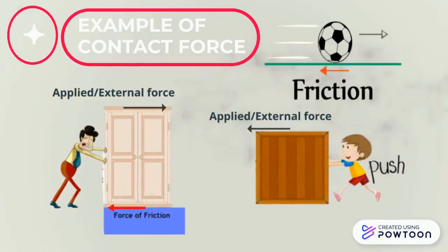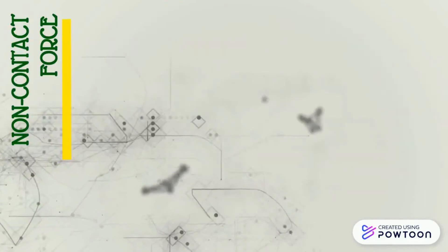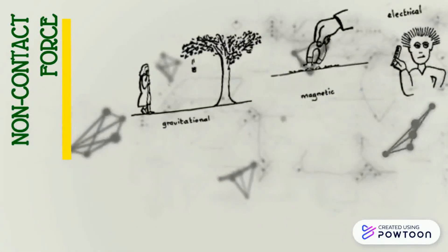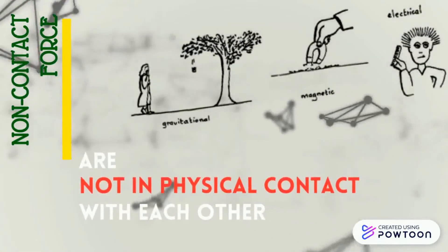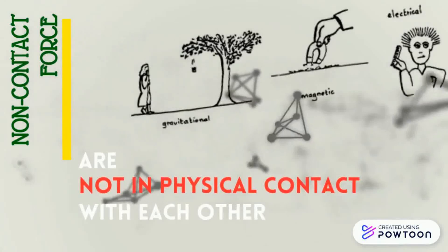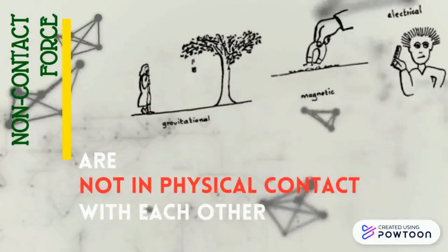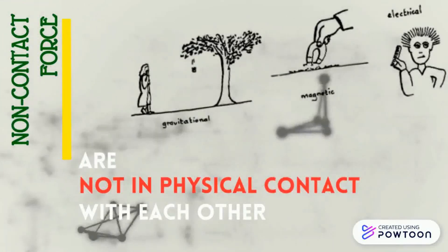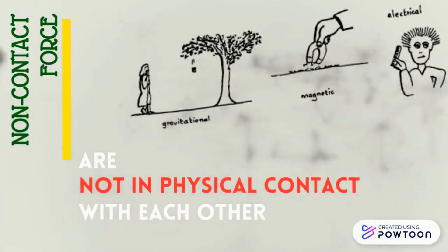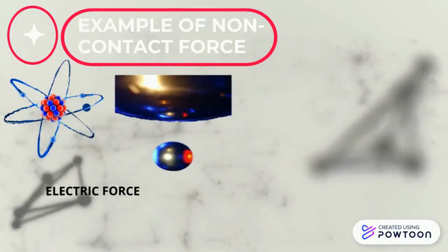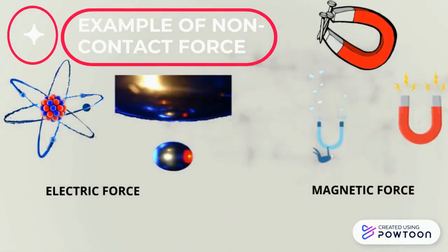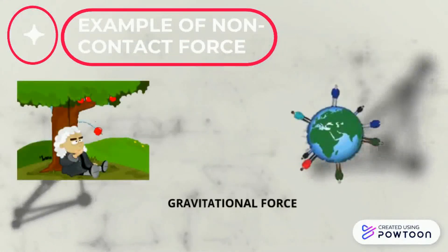These specific forces will be discussed in more detail in the next video. Non-contact forces are those type of forces that result even when the two interacting objects are not in physical contact with each other, yet are able to exert a push or pull despite their physical separation. Examples such as electric force, magnetic force, and gravitational force.